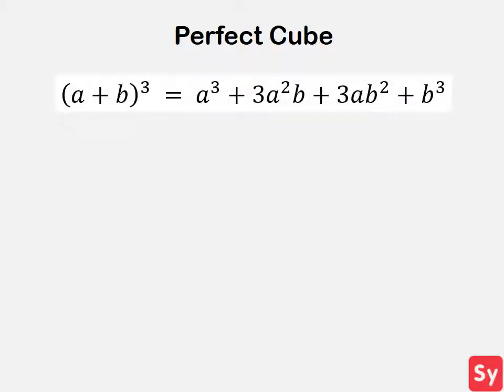A binomial in the form a plus b that is cubed equals a cubed plus 3a squared b plus 3ab squared plus b cubed.